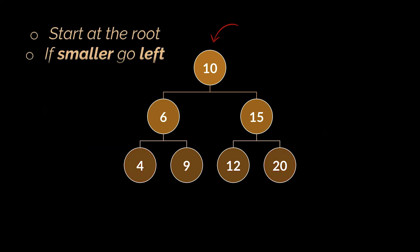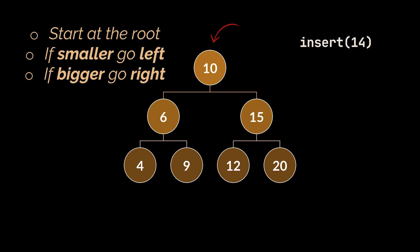The insert operation, given a certain value, starts at the root node and checks if the node we want to insert is smaller than the root — we go left. If not, we go right. We keep repeating this process on the node we hopped on until we find an empty slot to insert our node in. Let's try to insert a node having a value of 14 inside the tree. It is bigger than the root, so we have to go right. It is smaller than the following node, so we go left, and then right. Because there are no more nodes to compare it to, we insert it here, and that's it.